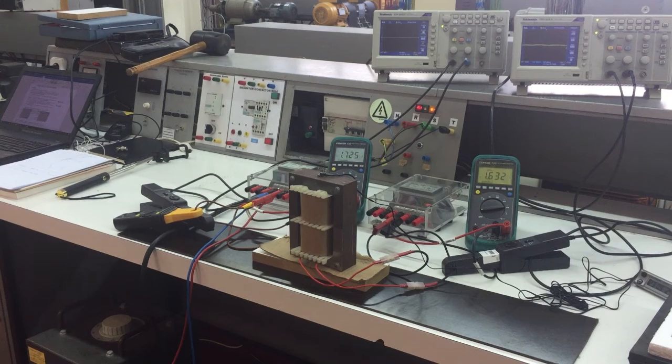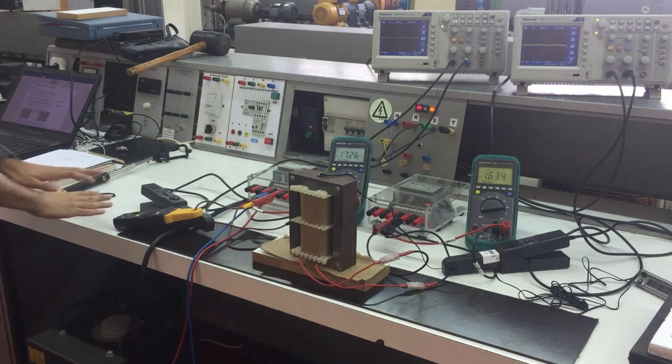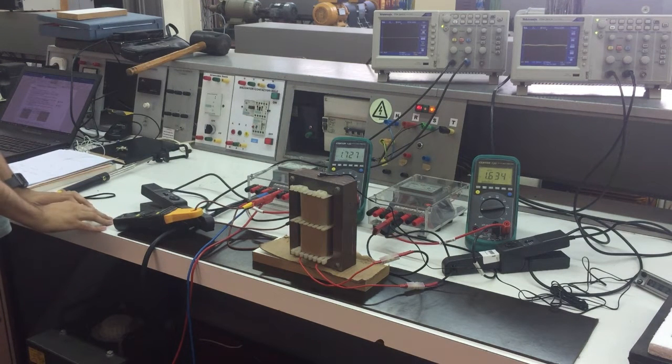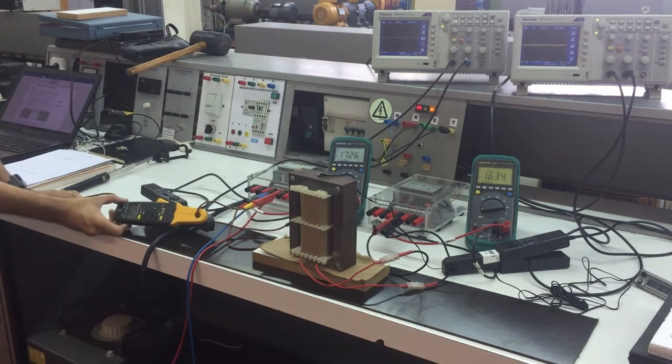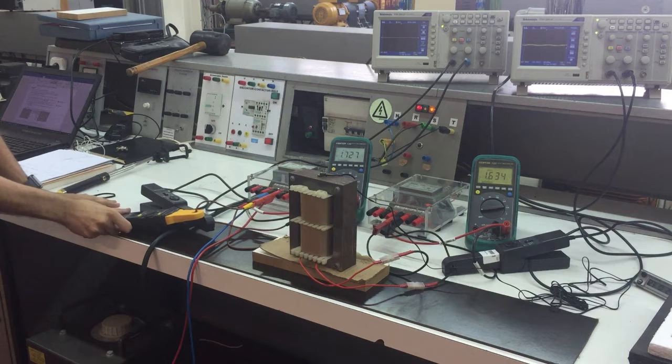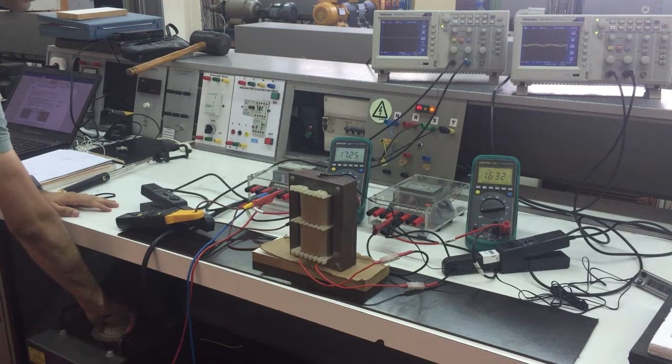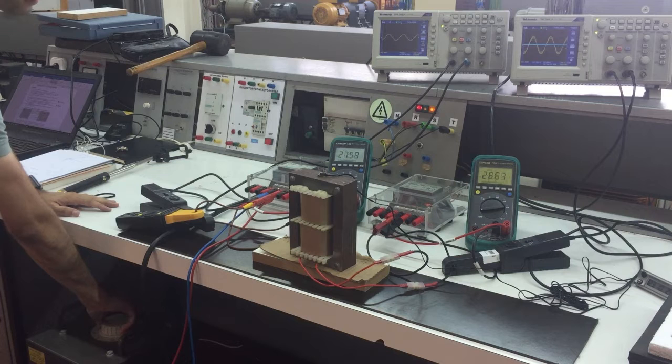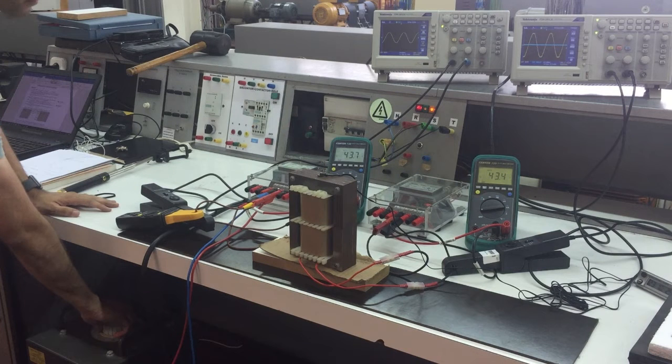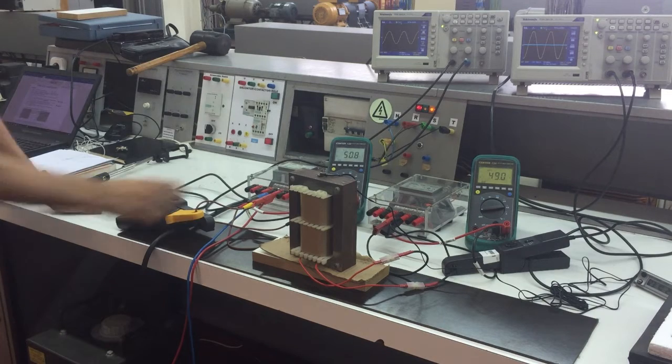To start the experiment, you need to be very careful. You need to be always looking for the voltage and current of the magnetic circuit. Now start by slowly increasing the voltage at the autotransformer until you have around 50 volts in the multimeter.